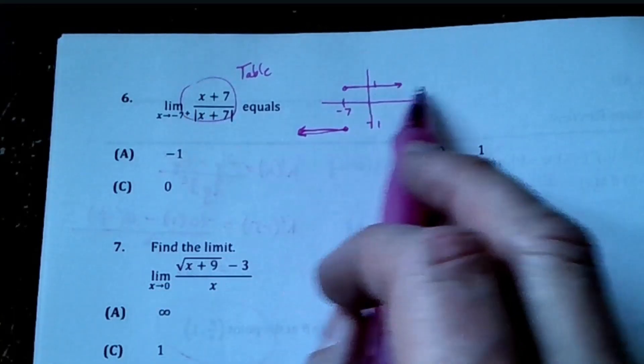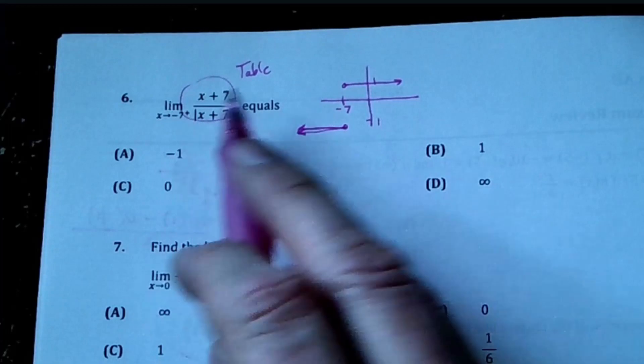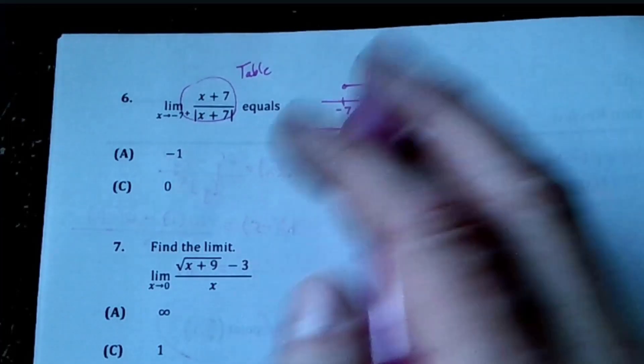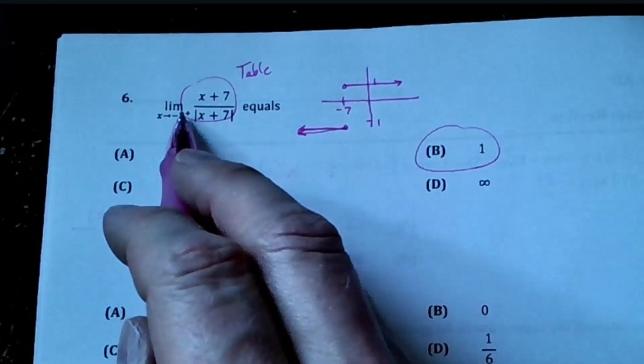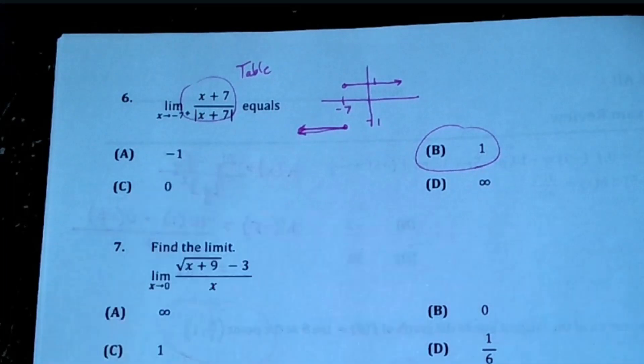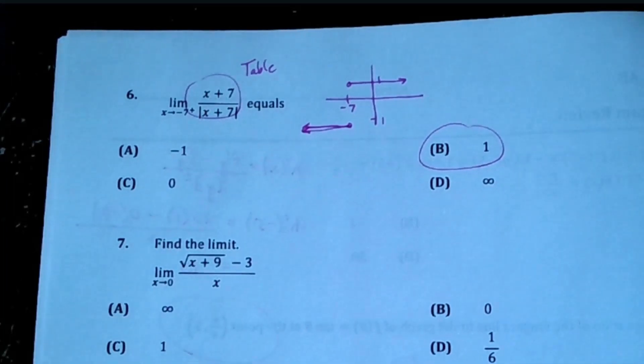This does say we're coming from the right. If we come from the right, that's going to be positive 1. If I came from the left at -7, we would have chosen -1. All right, we're at the nine-minute mark, I'll stop there.